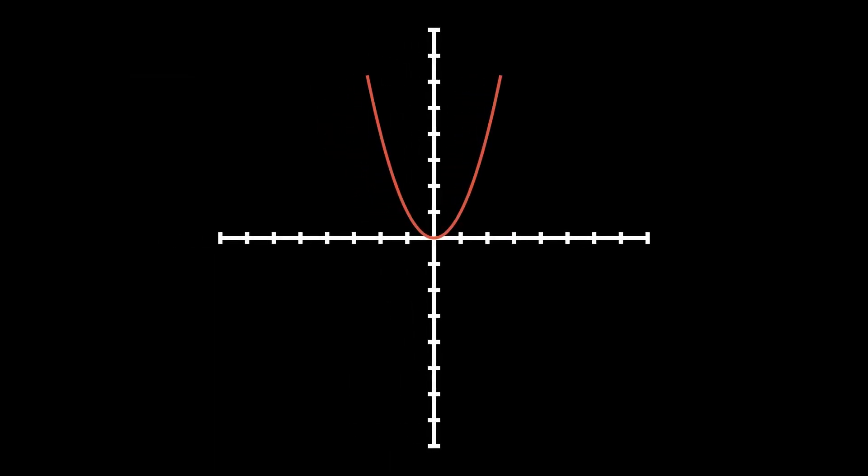As a refresher, the derivative basically allows us to calculate the slope of a function at a particular point. So let's say we had the function x squared and we wanted to find the slope at this point. Well, to find this value, we can use the derivative. But the question you may have is, how is it calculated?